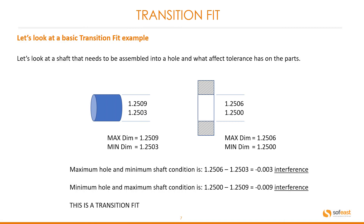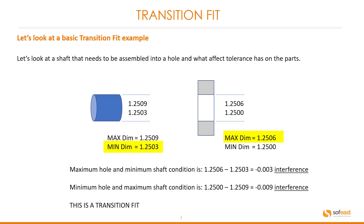Now let's have a look at a transition fit example. Here we have a shaft with a maximum dimension of 1.2509 and a minimum dimension of 1.2503. The hole has a maximum dimension of 1.2506 and a minimum dimension of 1.2500. At the maximum hole and minimum shaft condition, 1.2506 minus 1.2503 gives us a 0.003 interference. The minimum hole and maximum shaft condition gives us 1.2500 minus 1.2509, meaning we have a 0.009 interference fit. This is a transition fit.